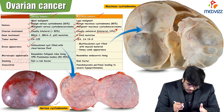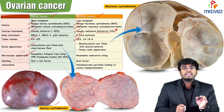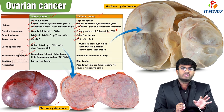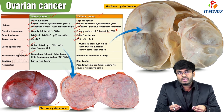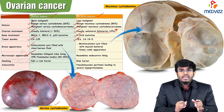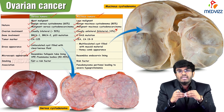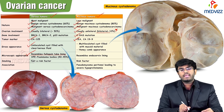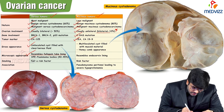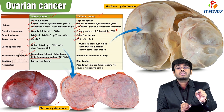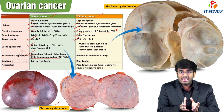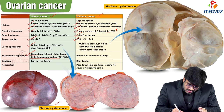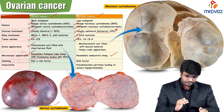Microscopic appearance is where exam questions are commonly asked. For serous tumors, the epithelium resembles fallopian tube lining, and under the microscope you can see psammoma bodies — calcium accumulation around tumor cells — in serous cystadenomas. For mucinous tumors, the epithelium resembles endocervical lining.